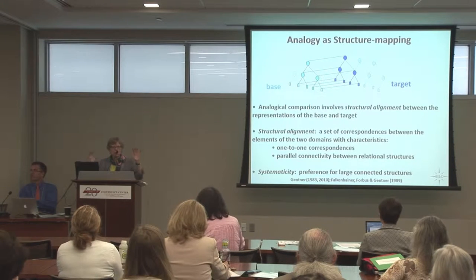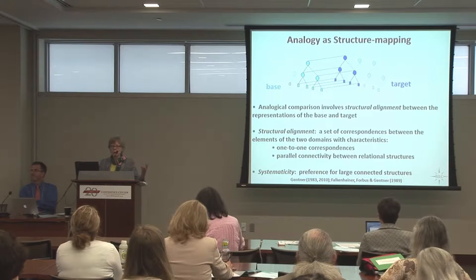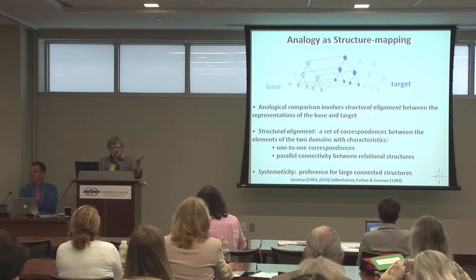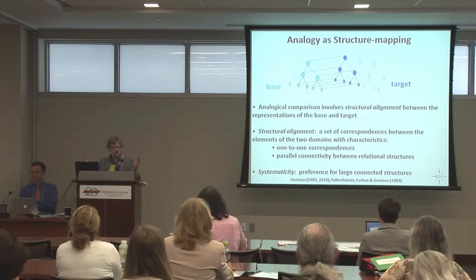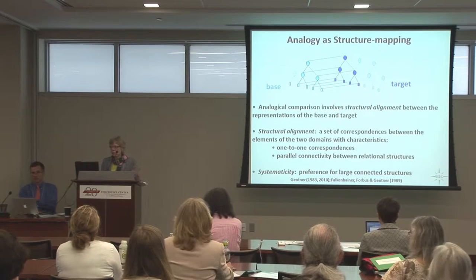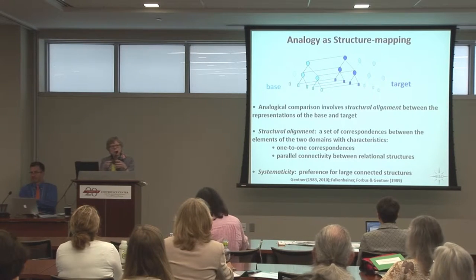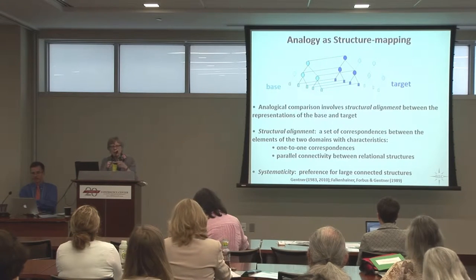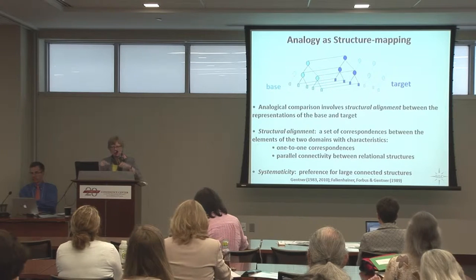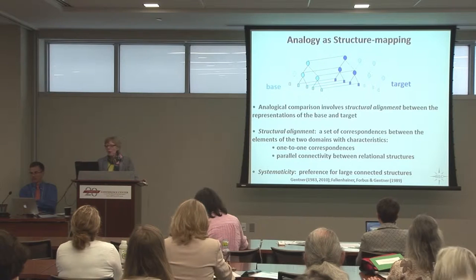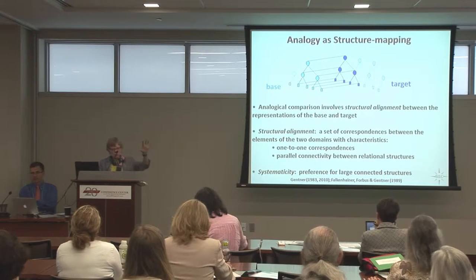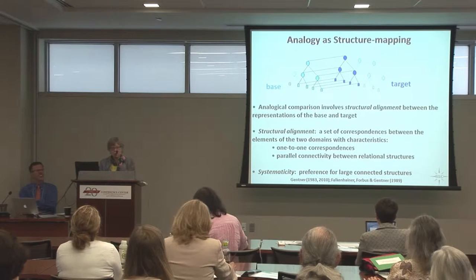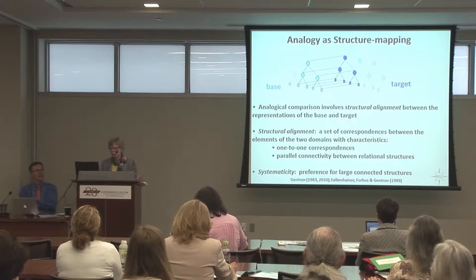There are many kinds of similarities between two complex situations. But if you want people to grasp a particular common relational structure, which is very often the case in science analogies, the alignment between the two things has to be such that the common relations correspond and the objects that also correspond are those that support the relational correspondence. So parallel connectivity between the relational structures of the two domains, or at least the ones you pick out for the analogy, is crucial.